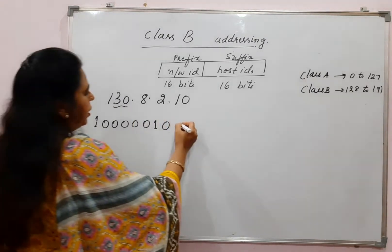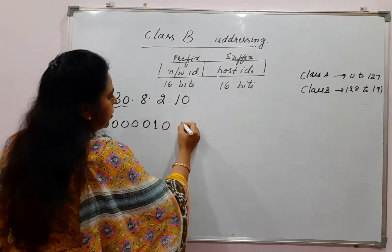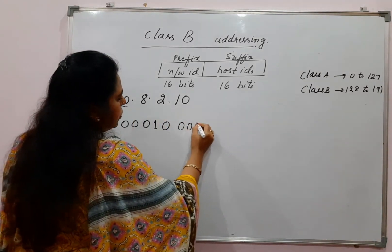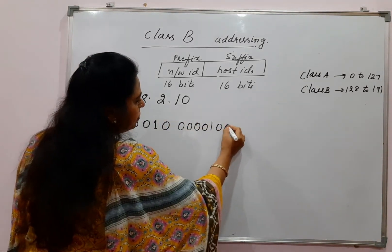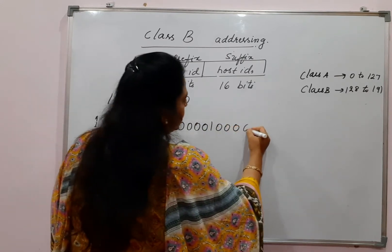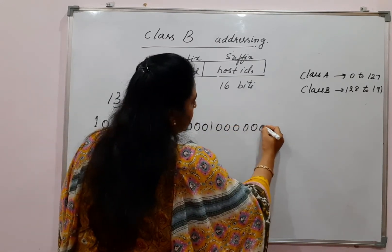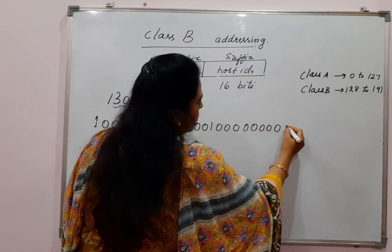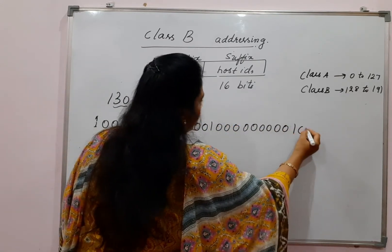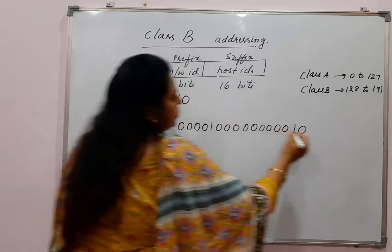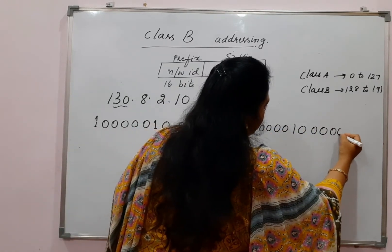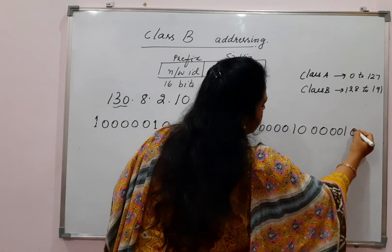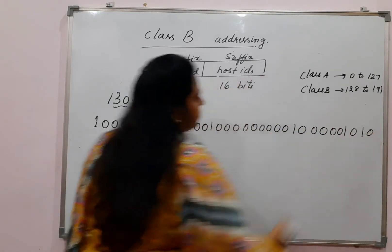Then comes 8, which you write in binary notation as 00001000. Then comes 2, written as 00000010. Then you have 10, written as 00001010.